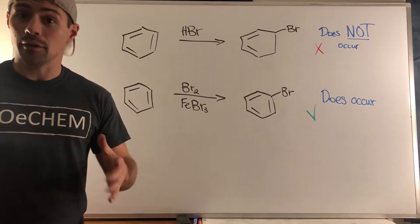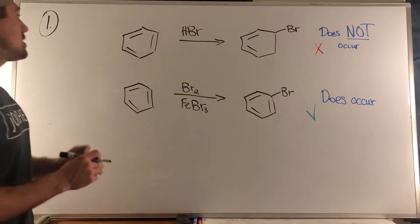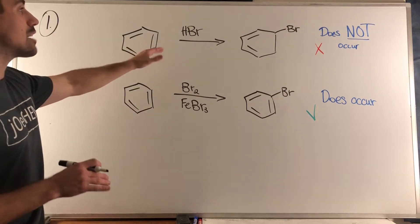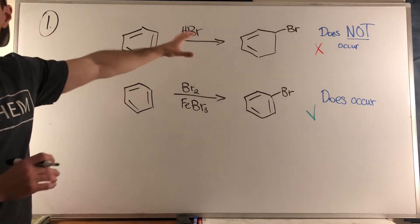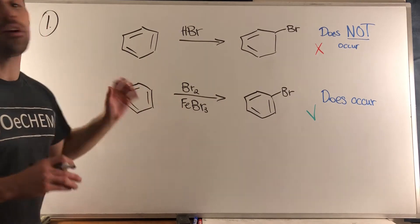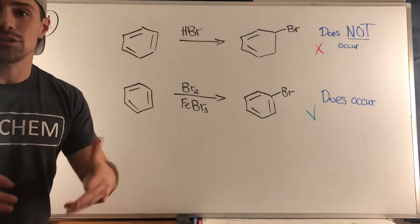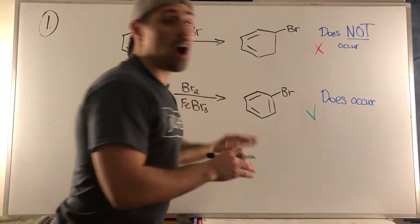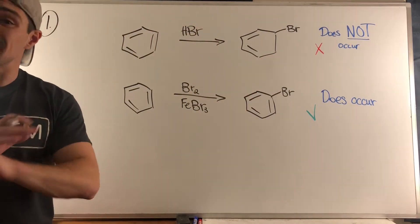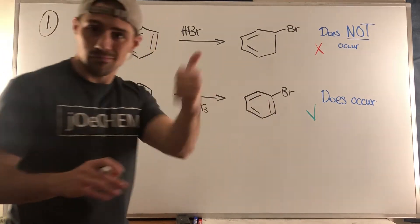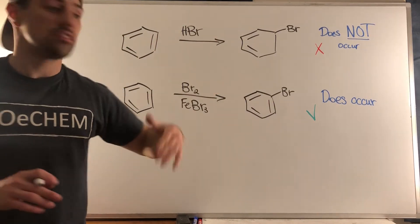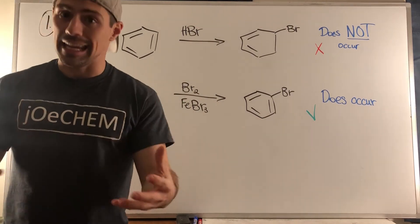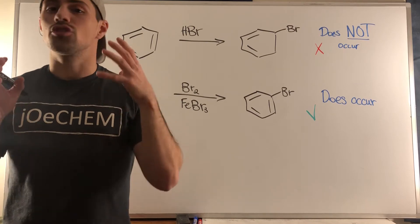Rolling into problem one, we see that we have benzene ring in both scenarios but we have different reagents. In the top reaction we can see this looks like a Markovnikov addition of HBr. Down here we see the very familiar bromination of a benzene ring, Br2 FeBr3. You can see that we are told this does not work, doesn't happen, reaction doesn't go. But down here all systems cleared, green check mark, this is a good reaction.